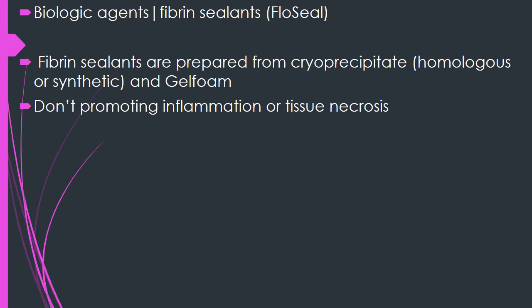Fibrin sealants are prepared from cryoprecipitate, mainly containing fibrin, and also contain gel foam as a vehicle. Gel foam acts as a tamponade effect, and when blood flows in between the gel foam molecules, the fibrin starts acting as a seal between the platelets.